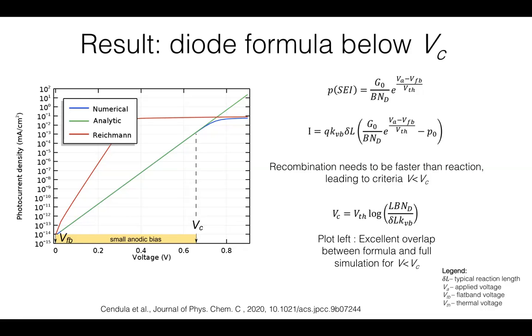This first formula is the hole concentration obtained from our model, which is the formula containing the direct recombination constant, donor concentration, pair generation rate, and the diode factor. The photocurrent looks like this.